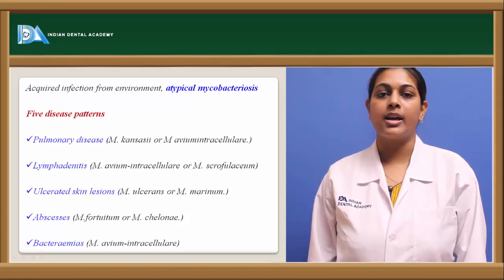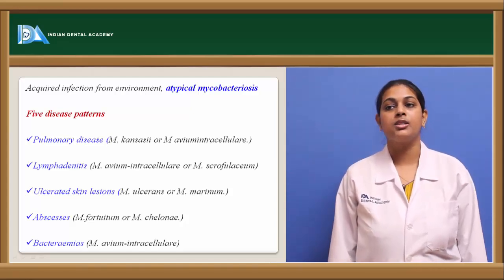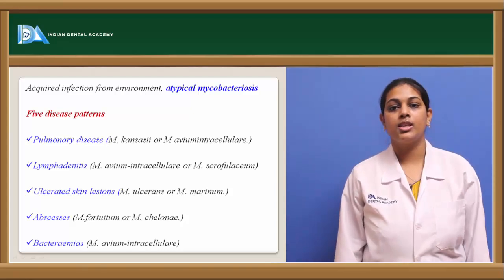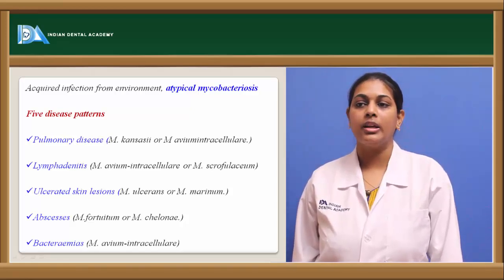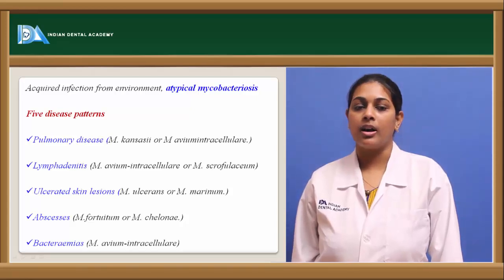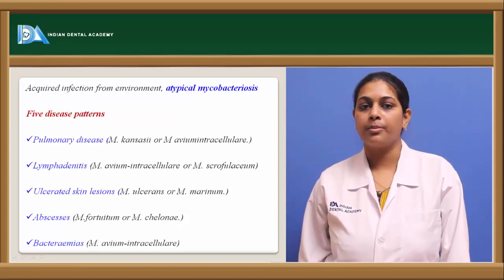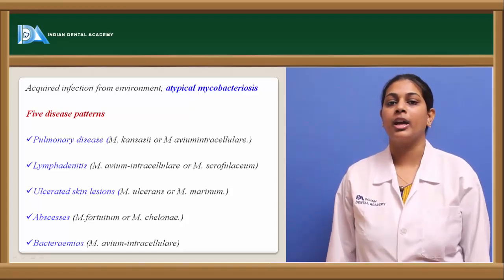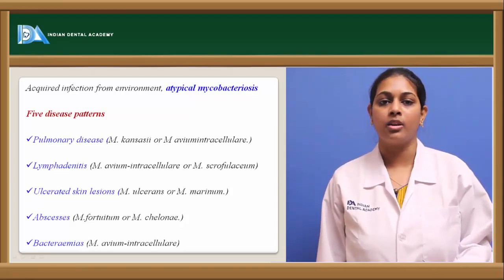Coming to lymphadenitis, which involves the lymph nodes: atypical bacteria causing atypical mycobacteriosis in lymph nodes are Mycobacterium avium intracellulare or Mycobacterium scrofulaceum. For ulcerated skin lesions, the species are Mycobacterium ulcerans or Mycobacterium marinum. For abscesses, they are Mycobacterium fortuitum or Mycobacterium chelonae. For bacteremia, that is progressive bacterial infections, they are Mycobacterium avium intracellulare.